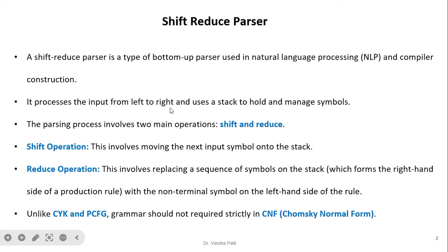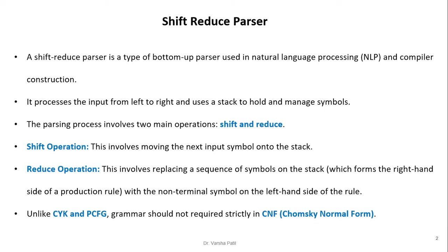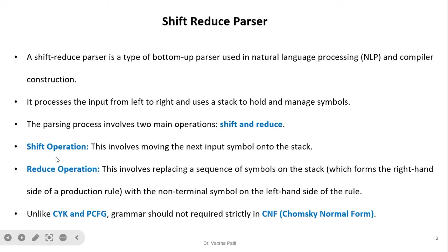The parsing process involves two main operations: shift and reduce. The shift operation involves moving the next input symbol onto the stack. The reduce operation involves replacing a sequence of symbols on the stack — which forms the right-hand side of a production rule — with the non-terminal symbol on the left-hand side of that rule.